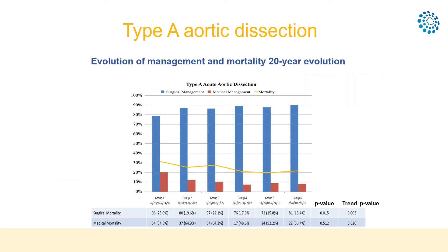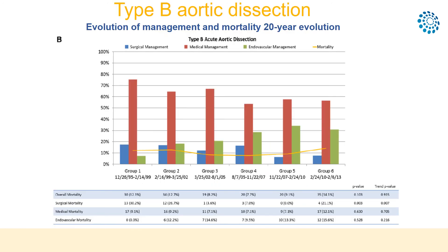This figure shows changes in medical and surgical treatment in Type A and Type B aortic dissection from the International Registry of Aortic Dissection. In Type A, the yellow line shows mortality decreasing over the years from 30% to 20%. In Type B dissection, there has been an increase in endovascular treatment over 20 years (shown by the green columns); however, mortality has not changed significantly.